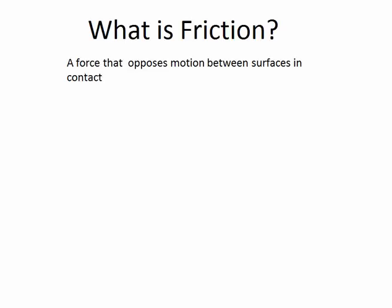It's a force that opposes motion between surfaces but also allows us to walk. Think about trying to walk on ice. Friction opposes your motion, but it helps in providing an anchor point so you can walk. We'll talk about this in another friction video.